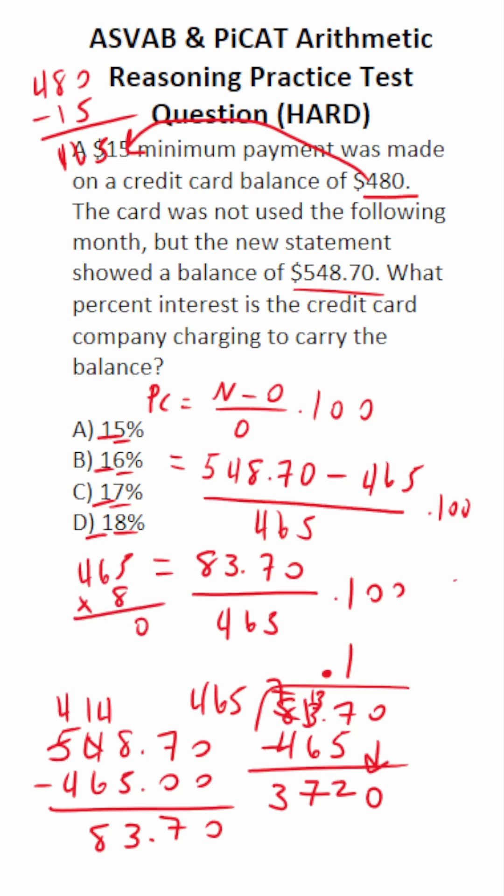5 times 8 is 40, carry a 4. 8 times 6 is 48, 49, 50, 51, 52, carry a 5. 4 times 8 is 32, 33, 34, 35, 36, 37. So we can see that 465 times 8 is exactly 3,720. So we have no remainder.